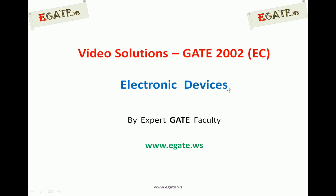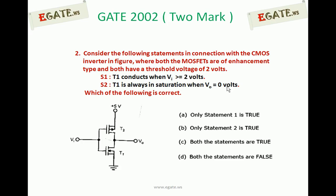Hello, we are discussing the GATE 2002 ECE paper and the topic is Electron Devices. This is the second set of questions from GATE 2002. Consider the following statements in connection with a CMOS Inverter as shown, where both MOSFETs are enhancement type and both have a threshold voltage of 2 volts.